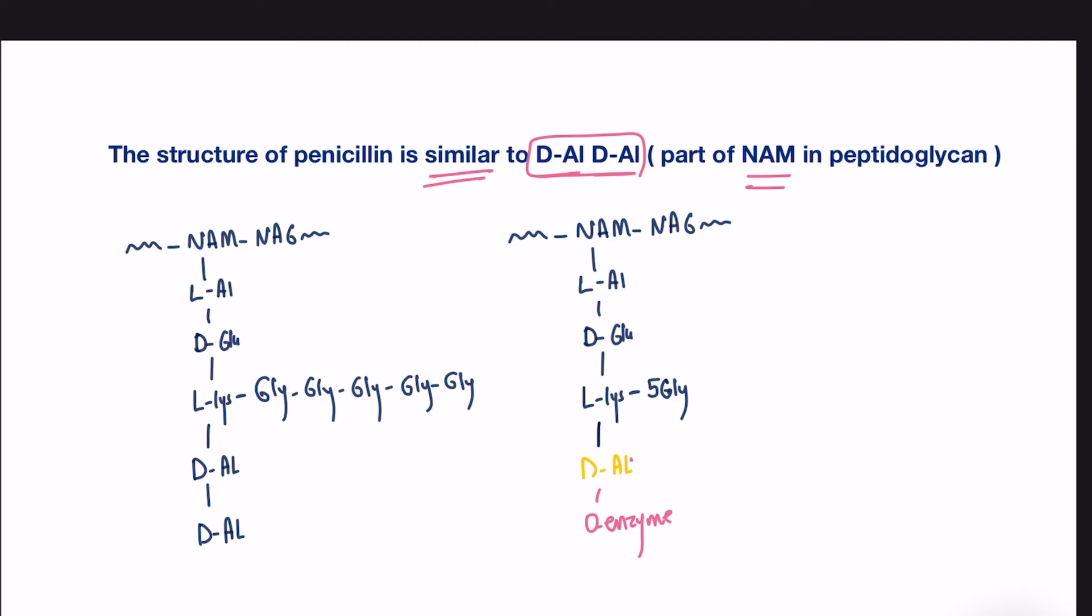Then, what next happens, another peptidoglycan chain that is preformed in the cell will reach the cell wall site, and the fifth glycine of the NAM will now come in attack, making the enzyme leave. So, now we will have 1 D-alanine that is bound to glycine through a peptide bond. And this is how they are linked together. So, if we have another chain of peptidoglycan, the terminal glycine of the NAM will be attached to another D-alanine here. And so on.